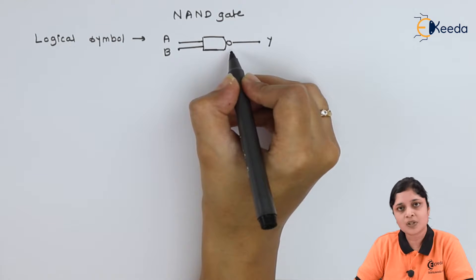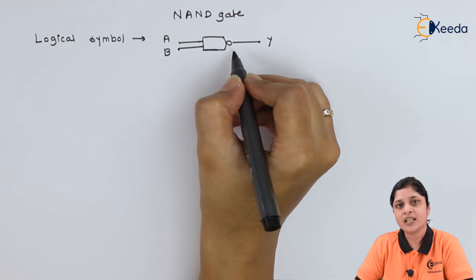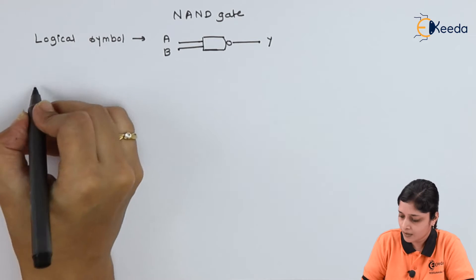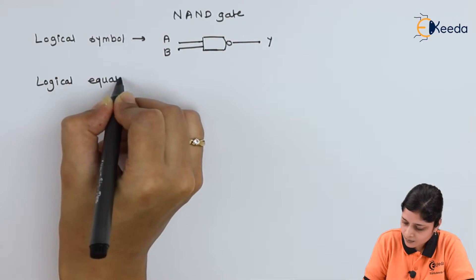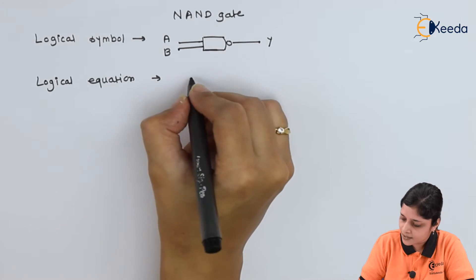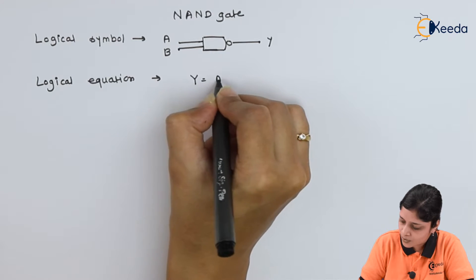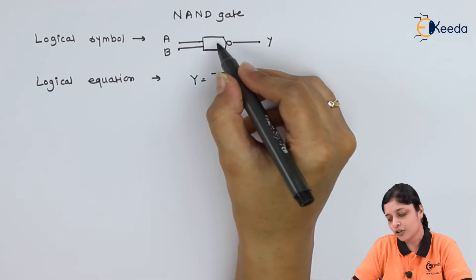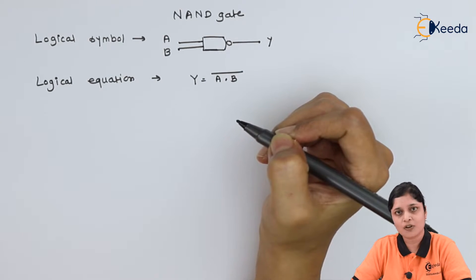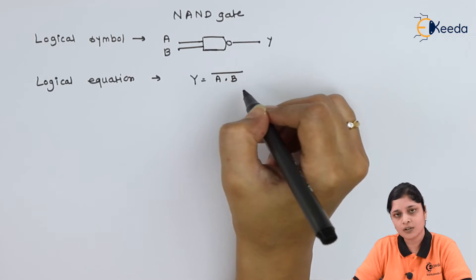This bubble shows that it is a complemented one or inverted one. Logical equation for NAND gate is Y equals to A dot B complement because here bubble is there and logical equation of AND gate is always A dot B.